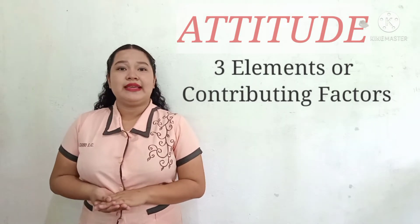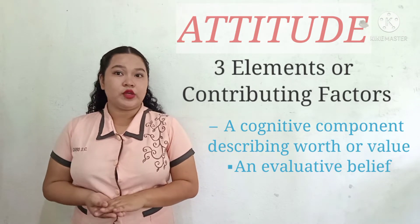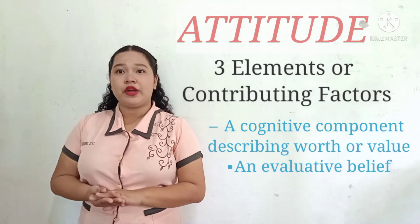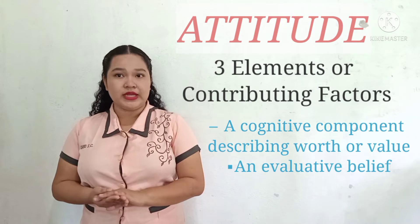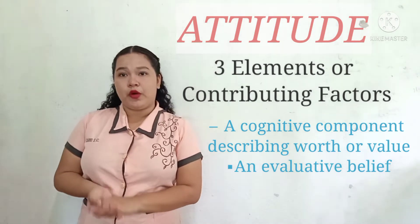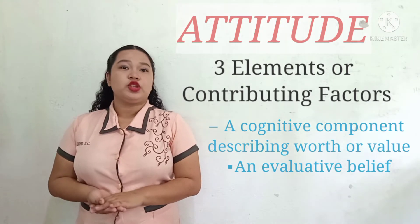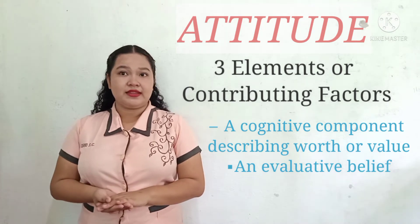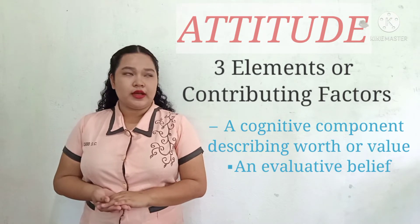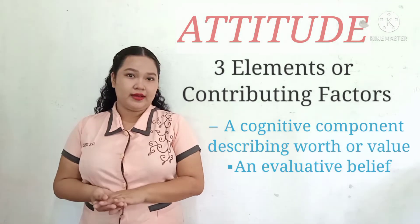The next one is the cognitive component, describing worth or value. It is an evaluative belief — attitudes are shaped by our ideas, beliefs, and qualities about objects. It represents one type of attitude, an opinion or viewpoint, and pertains to that part of a person's attitude that has connection to their broad knowledge. Typically, this comes to light in generalities or stereotypes, such as all babies are cute or smoking is harmful to health.